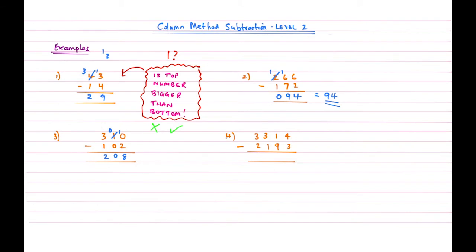And now question number 4. So 4 columns this time. So it's a number in the thousands. And we're going to approach each column in turn. So 4 take away 3 gives me an answer of 1. 1 take away 9. 1 smaller because I'm checking each column in turn, remember. So I'm going to have to borrow.